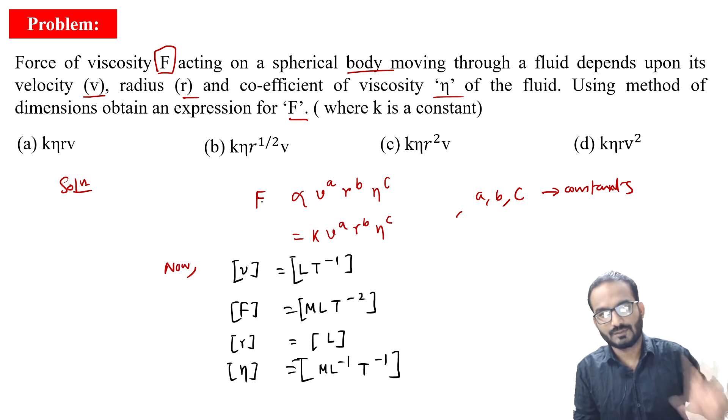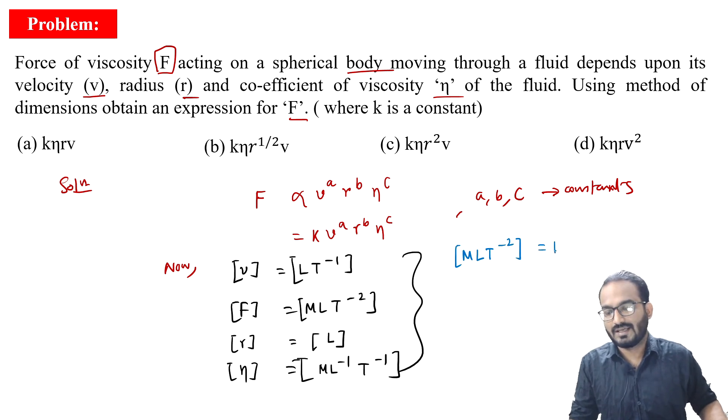Now, according to the principle of homogeneity, the dimension of left hand side and right hand side should be the same. So we are going to equate the dimension on both sides. The left hand dimension is [MLT^-2] and the right hand dimension is—K is a constant so we ignore it—V to the power A means [LT^-1]^A, R to the power B is [L^B], eta is [ML^-1T^-1]^C.